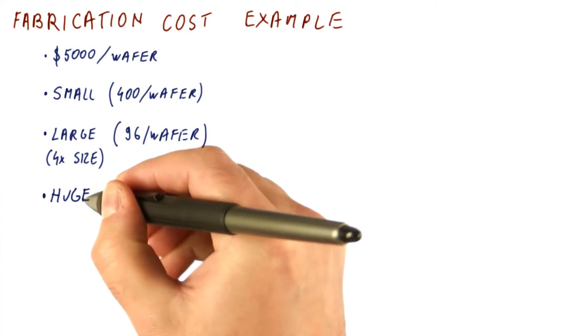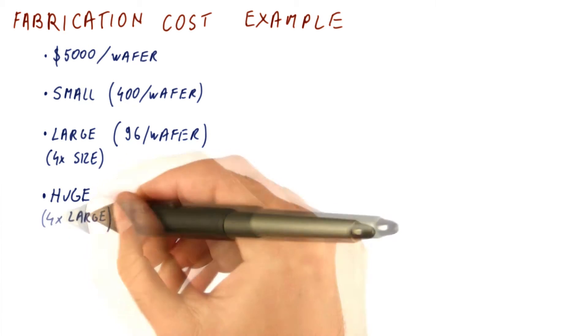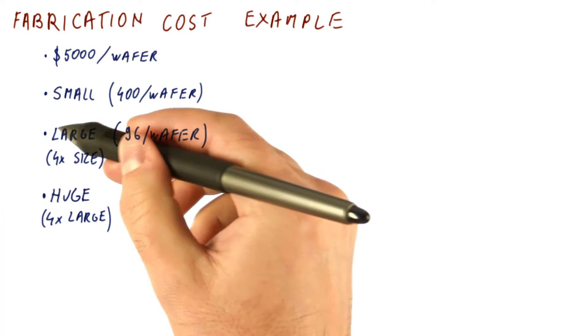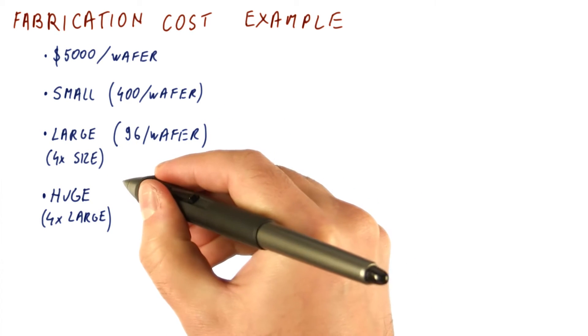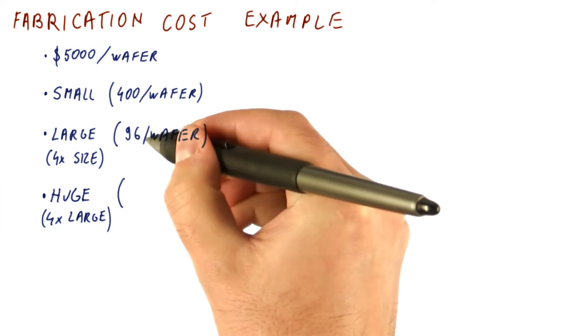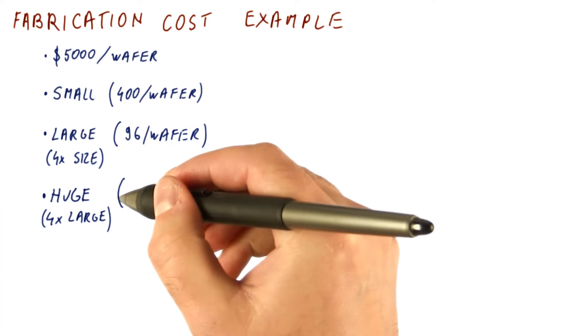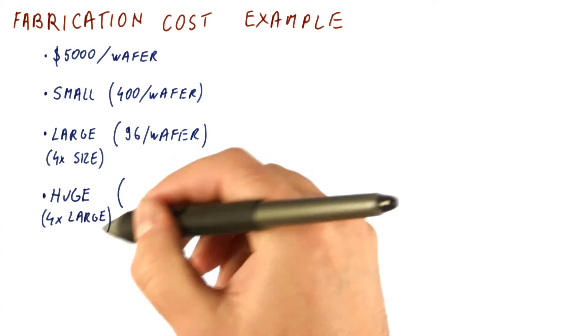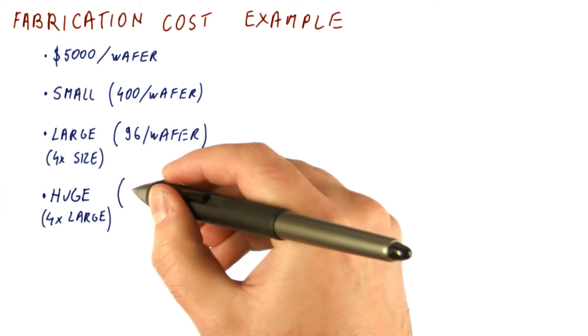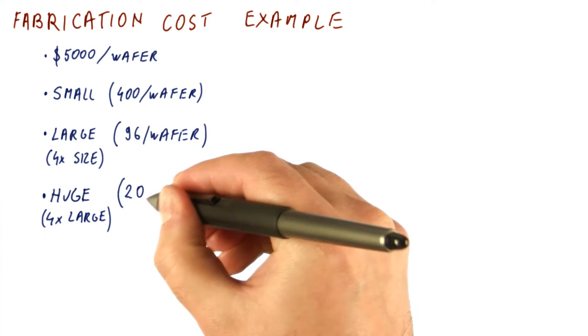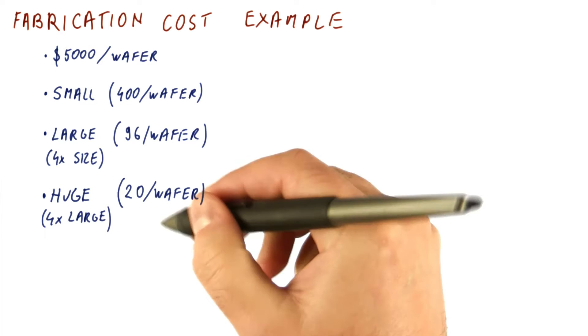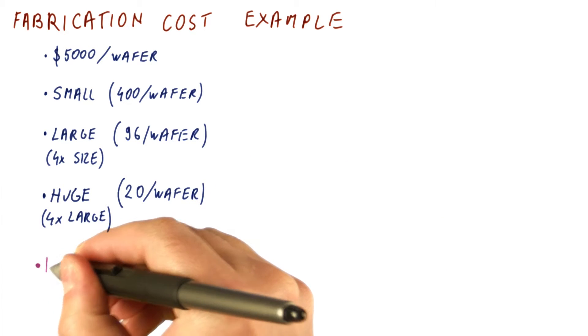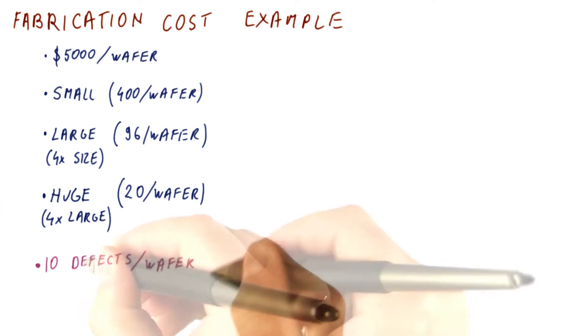And finally, we will consider huge chips that are four times again. So they're four times the size of the large chip, and then 24 of them would be a quarter of this. But because again the wafer is round and the chip is square, we lose some more along the edges, so let's say only 20 of them can fit on a wafer. And let us also suppose that there are 10 defects on each wafer.